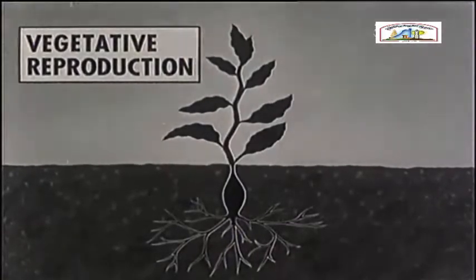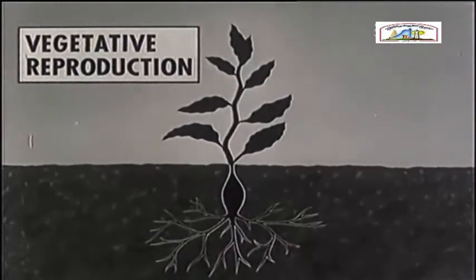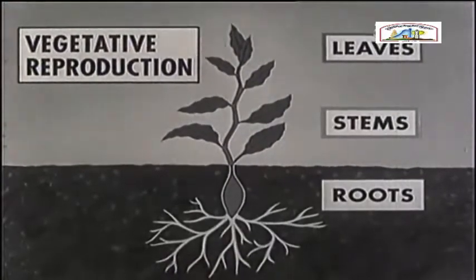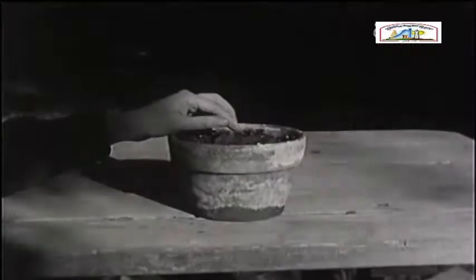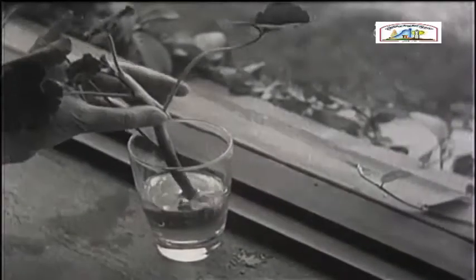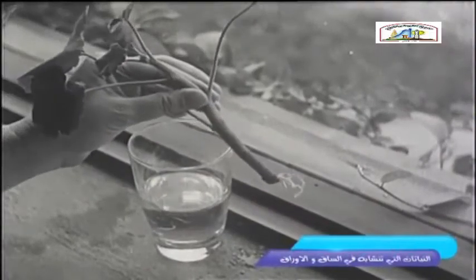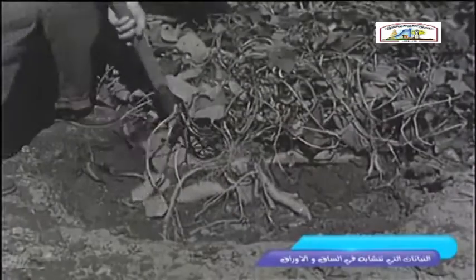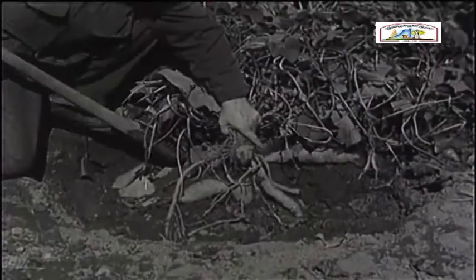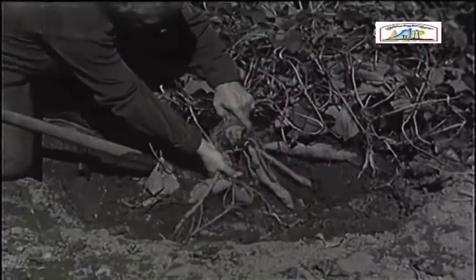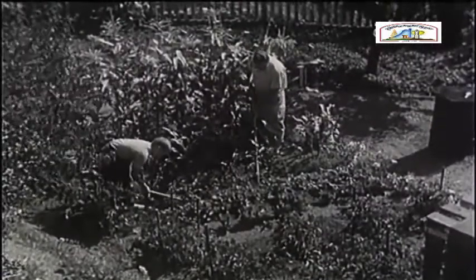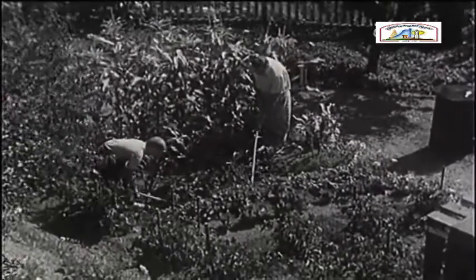We have seen many examples of vegetative reproduction, a way of reproducing plants using leaves, stems, and roots. Plants grown by vegetative reproduction become full grown faster than those grown from seeds. Plants grown from leaves, stems, or roots also have a better chance of surviving. And the new plants have the same characteristics as the plants from which they were taken, so desirable traits can be carried on. These are the main reasons why gardeners and farmers often grow plants by means of vegetative reproduction.